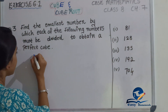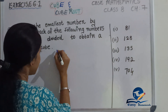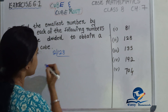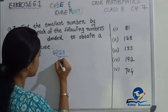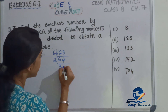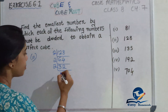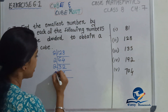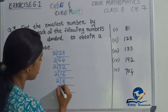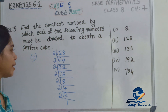For the next question, we will discuss the number 128. We will do prime factorization by dividing by 2 repeatedly: 128, 64, 32, 16, 8, 4, 2, 1.